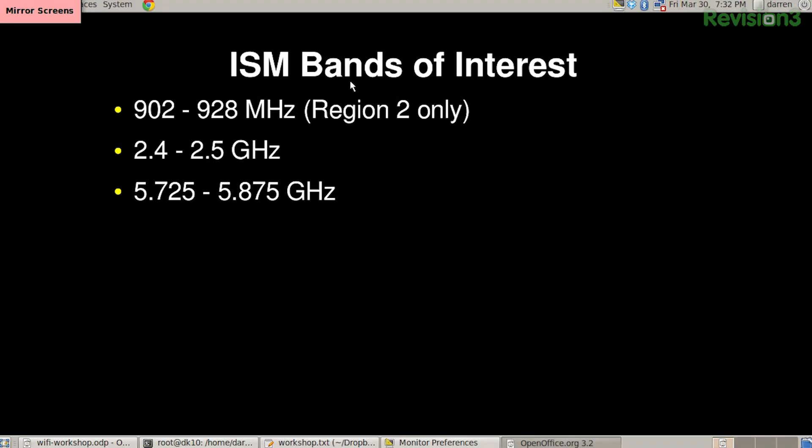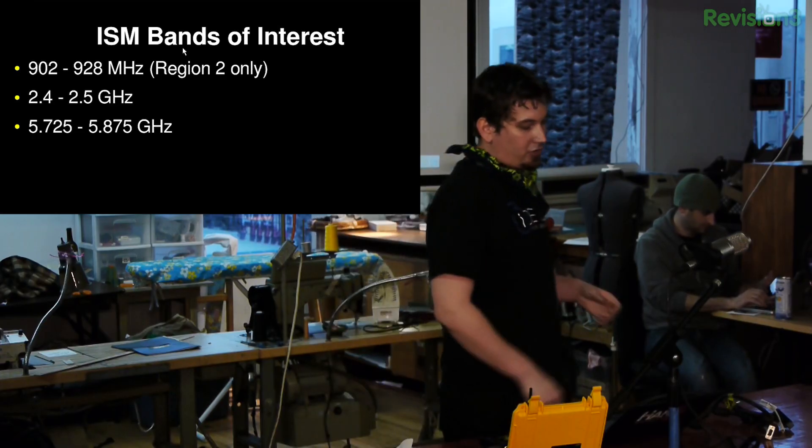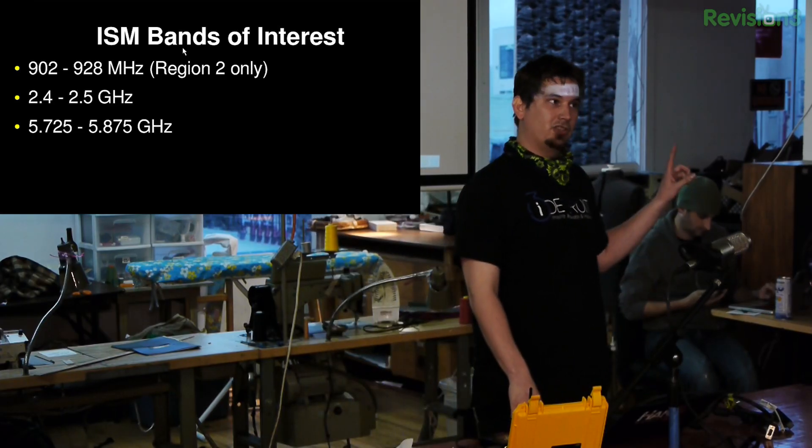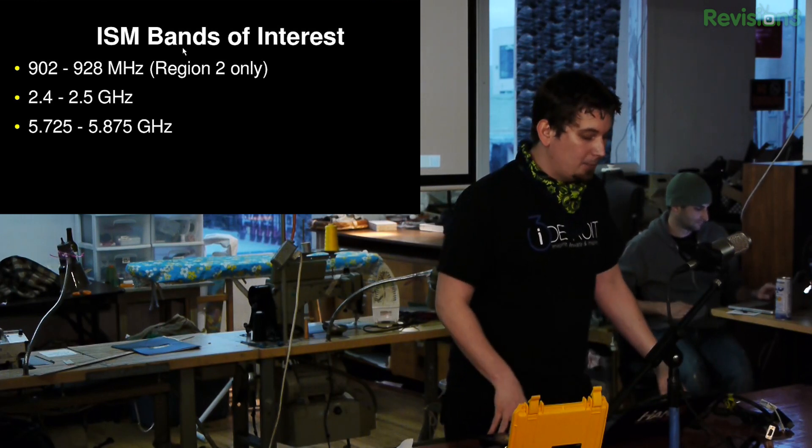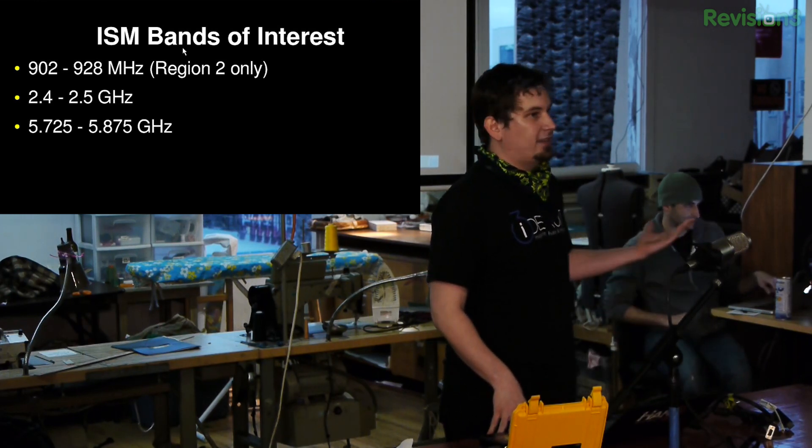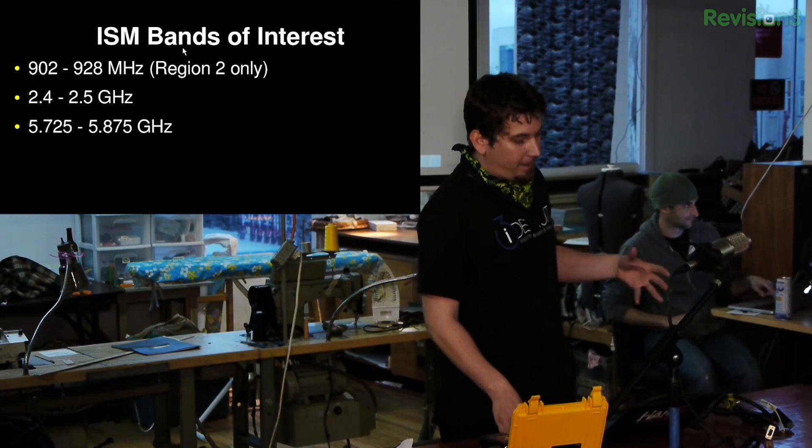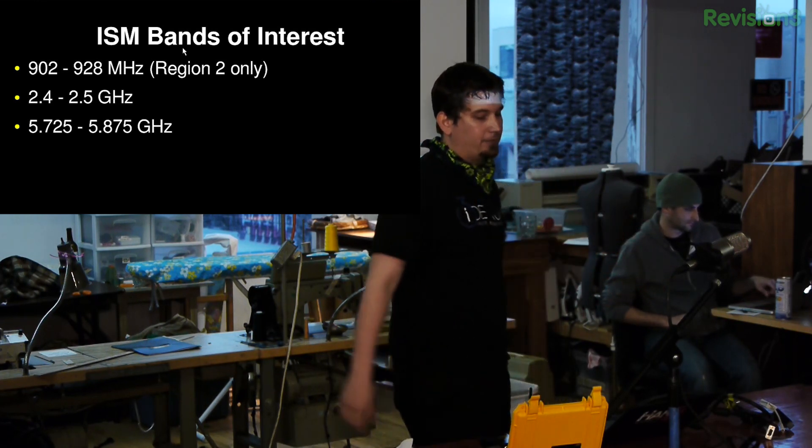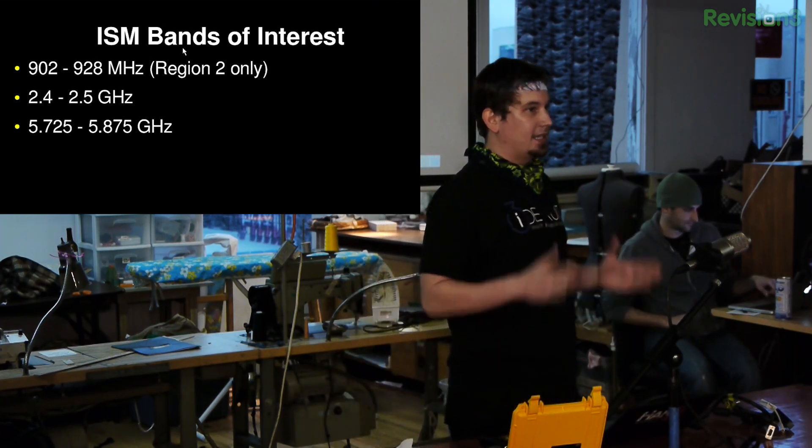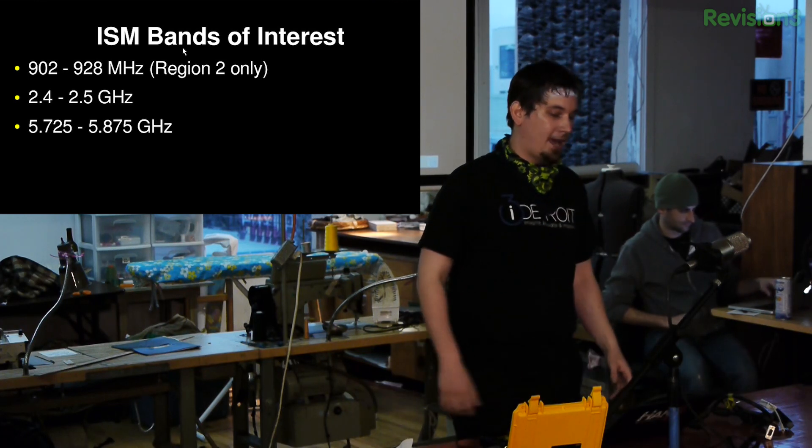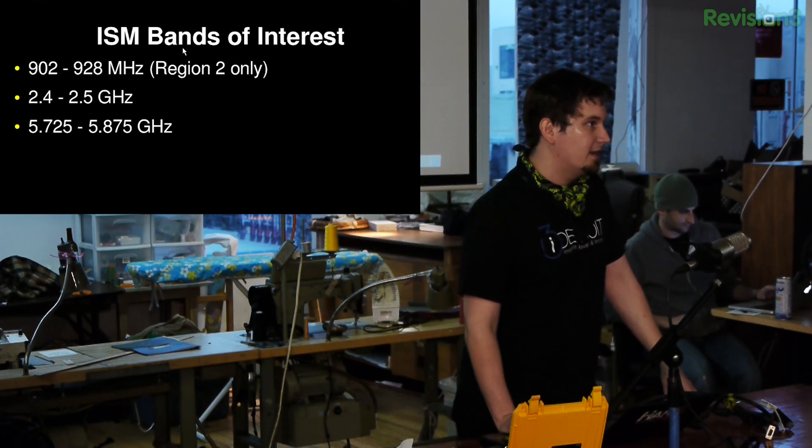There are lots of different bands in the ISM band or sets of spectrum that interest us. These are the three most interesting right now: 902 to 928 in region 2 only, we'll get to that in a second. 2.4 to 2.5 gigahertz, we just call that the 2.4 gigahertz spectrum. And 5.725 to 5.875, kind of a narrow slice. A lot of fun stuff can happen in it. We call that the 5 gigahertz band in Wi-Fi.